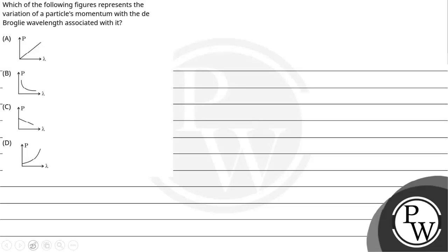Hello, let's read this given question. The given question says which of the following figures represents the variation of a particle's momentum with the de Broglie wavelength associated with it, and we have four options.